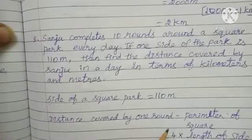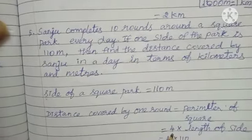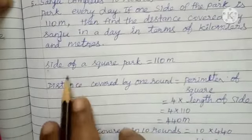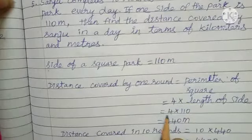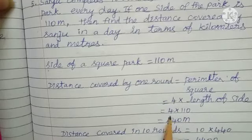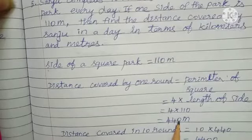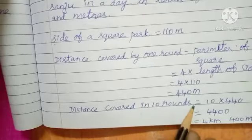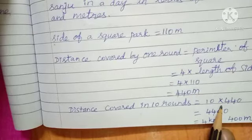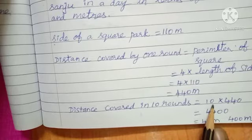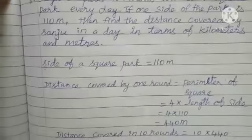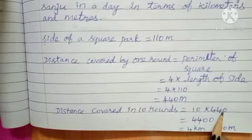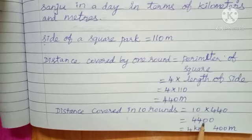First find the distance covered in one round — that is the perimeter of the square. Formula: 4 multiply the length of one side. So 4 multiply 110 equals 440 meter. Then, distance covered in 10 rounds equals 10 multiply 440. Easy to find: 440 multiplied by 10 equals 4400 meter.